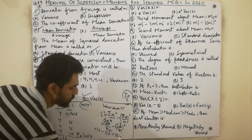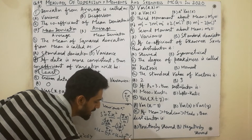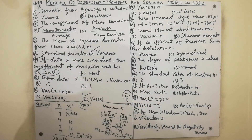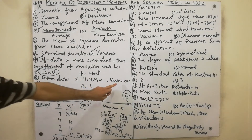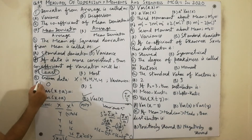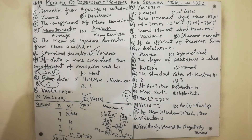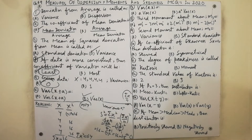Putting values: 64/4 minus (16/4) squared = 16 minus 16 = 0. The variance will be zero. I hope it is clear how to calculate variance — very simple steps.